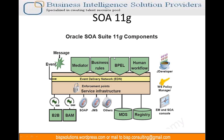BPEL is used for orchestration, as we just saw. Human Workflows are used wherever human interventions are required in a business process — for example, you apply for leave, it goes to your manager for approval, and your leave balance is not debited until the manager approves or disapproves. B2B is used for e-commerce connections like EDIs, RouterNets, and HL7s.